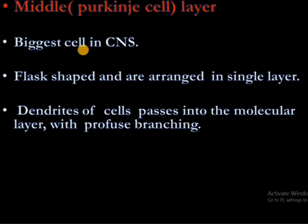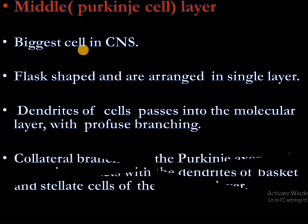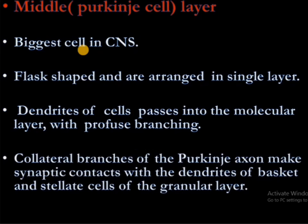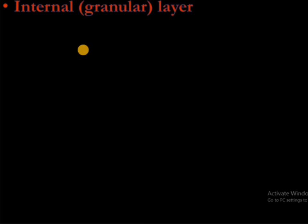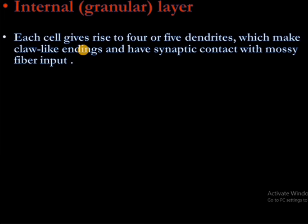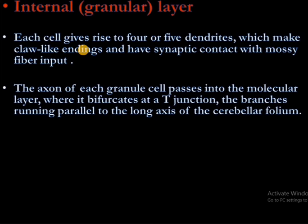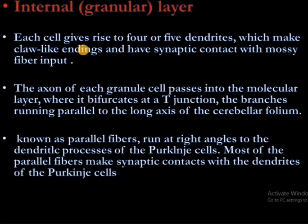Dendrites of the cells pass into the molecular layer with profuse branching. Collateral branches of the Purkinje axons make synaptic connections with the dendrites of the basket and stellate cells of the granular layers. Each granular cell gives rise to four to five dendrites which make claw-like endings and have synaptic contacts with mossy fiber inputs. Axons of each granular cell pass into the molecular layer where it bifurcates at the T-junction and branches run parallel to the long axis of the cerebellar volume. These are called parallel fibers and run at right angles to the dendritic processes of the Purkinje cells. Most of the parallel fibers make synaptic contacts with the dendrites of the Purkinje cells.